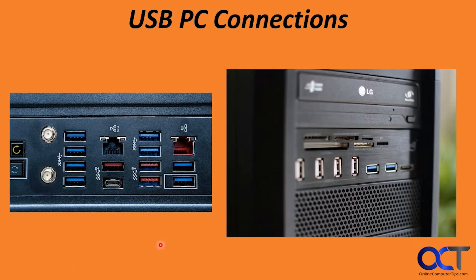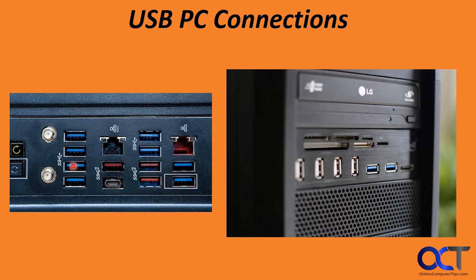Here are some USB PC connections you might see on your computer. On the left is the back of a computer — you can see different colored ports, some labeled SuperSpeed and some that are not. You can't always go by port color alone to determine speed; unless it explicitly says SuperSpeed or SuperSpeed 10 on the port, you'll need to do a little research. There's also a USB-C port visible here. Most of the time, plugging into anything labeled SuperSpeed will be plenty fast enough.